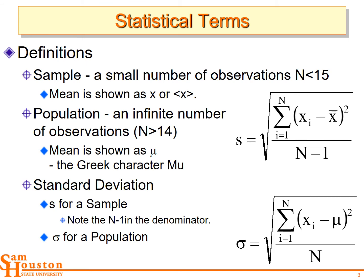Some terms you've learned in quant: the standard deviation. We have a couple of versions — the standard deviation for a population, which we call the Greek symbol sigma, or for just a sample, we call it s. A population is essentially an infinite number of observations, or once you get to 15, the difference between the sample and population version of standard deviation is essentially washed out. So infinity is just 15 or more.